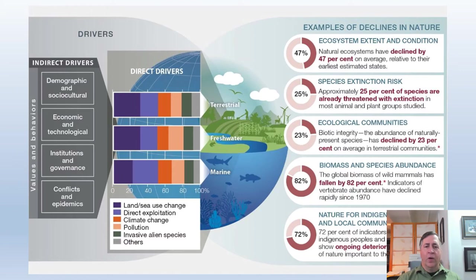Climate change isn't the only stress on ecosystems and local communities. Clearing forests and other natural land for agriculture or development is also a major threat to ecosystems and wildlife. Other threats include poaching, overfishing, pollution, and invasive species. But climate change makes all of these worse — it acts as a threat multiplier. And because humans rely on a healthy environment for their existence and well-being, impacts to ecosystems equate to impacts to people. The coronavirus pandemic is an example of that and possibly a harbinger of worse to come.